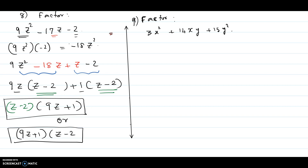Problem number 9: factor 3x squared plus 14xy plus 15y squared. Here also the leading coefficient is more than 1. First multiply the first and the last coefficient: 3 times 15 equals 45. Now we have to break the middle term into two parts where, when you add, you get 14xy, and when you multiply, you get 45x squared y squared.